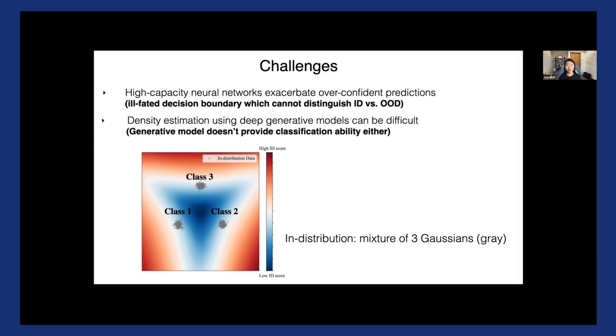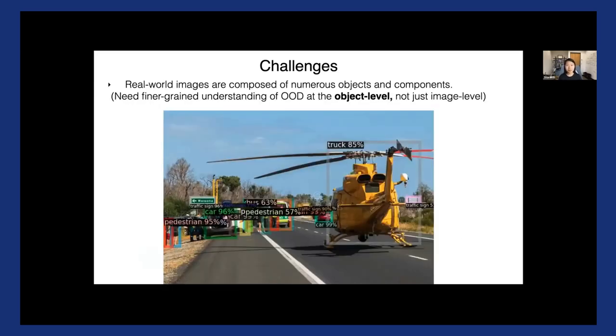And just in case you're wondering, can we perform density estimation to directly estimate the likelihood? It turns out there are some challenges too. For example, training deep generative models can be hard to optimize. And moreover, generative models doesn't provide classification ability either, which is something we're interested in. And one last challenge is that real-world images are composed of multiple objects and components, and therefore we need a finer-grained understanding of OOD at the object level beyond image level.